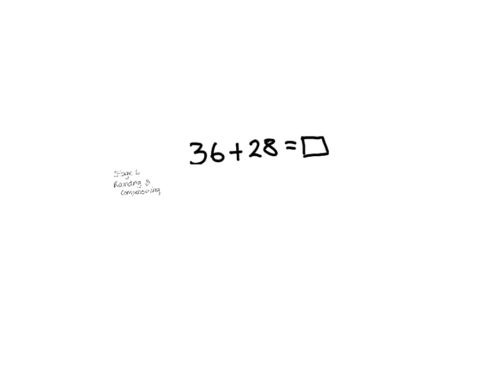So in this occasion, we're going to round 28. We're going to add two to that, and that now makes 30. So our new equation is 36 plus 30 equals, well, 30 plus 30 is 60, so 36 plus 30 is 66.